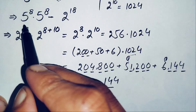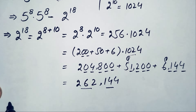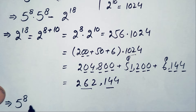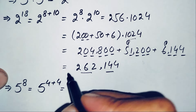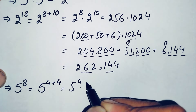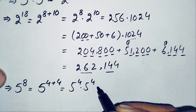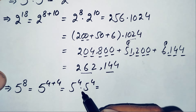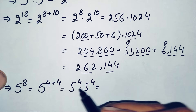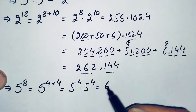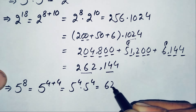Now we find the value of 5 raised to power 8. We write power 8 as 4 plus 4, and using the exponential identity this becomes 5 raised to power 4 times 5 raised to power 4. What is 5 raised to power 4? 5×5=25, 25×5=125, and 125×5=625. So the value of 5 raised to power 4 is 625.